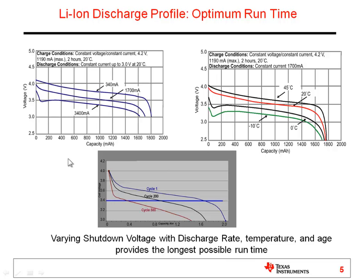A fuel gauge that is going to give you good runtime under all these different conditions should allow you to vary the shutdown voltage. We'll talk about that later as one of the benefits of impedance track.